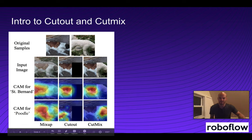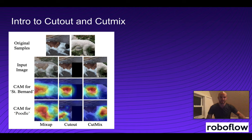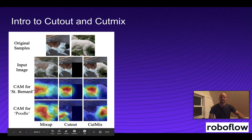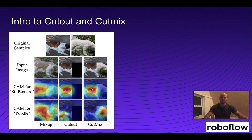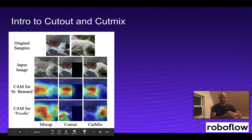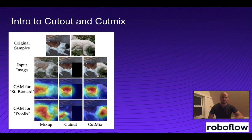The other technique is CutMix, where instead of just cutting out a black square, you take a piece of a different image and move it over to where the cutout was originally. For St. Bernard and Poodle, we can see we've mixed those two images together. Looking at the CAM for each, there's more activation for the St. Bernard on the back half of the dog, and for Poodle more on the right half — showing the model is learning robustness to identify things in different places.